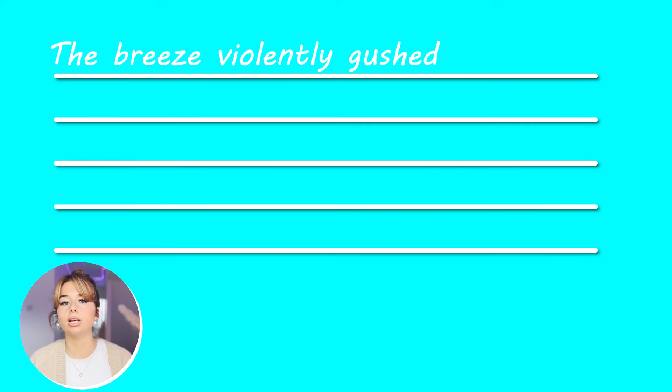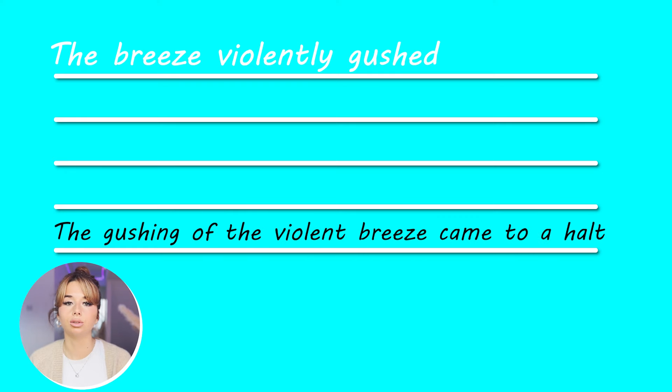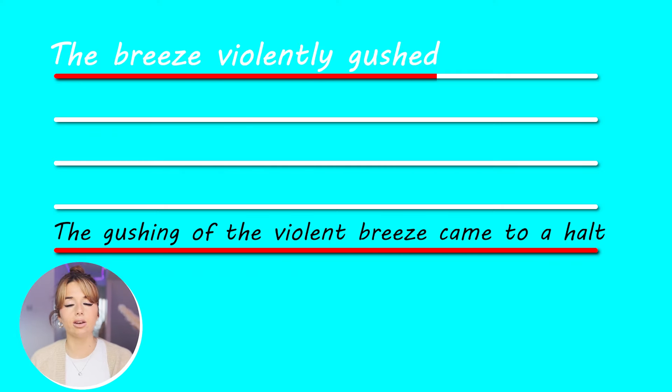If you want to make it slightly different, say your opening sentence is 'the breeze violently gushed.' Your ending could be 'the gushing of the violent breeze came to a halt' — still using very similar words. This gets you marks not only for language, as it's technically repetition, but also for structure, which is a massive component of creative writing.